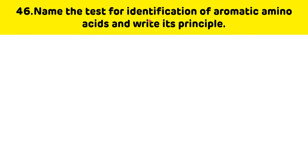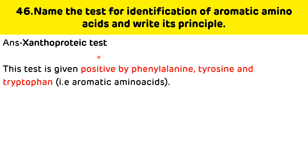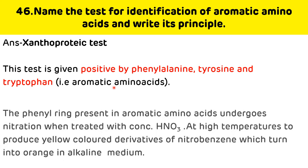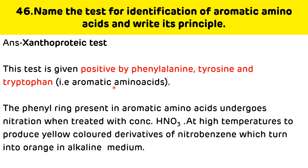Name the test for the identification of aromatic amino acids and write its principle. The answer is the xanthoproteic test. This test is given positive by phenylalanine, tyrosine, and tryptophan. The phenyl ring in aromatic amino acids undergoes nitration when treated with concentrated HNO₃ at high temperature to produce yellow-colored nitrobenzene derivatives, which turn orange in alkaline medium.